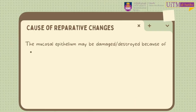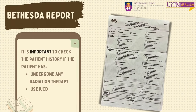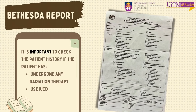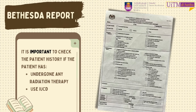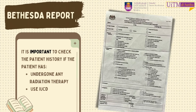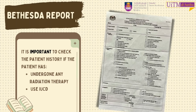The cause of reparative change: the mucosal epithelium may be damaged, causing inflammation, cauterization, delivery, surgery, or even radiation. It is important to know about patient history — check if the patient has had radiation therapy, chemotherapy, or even uses an IUD, because this might give different interpretation in cervical cell reporting.